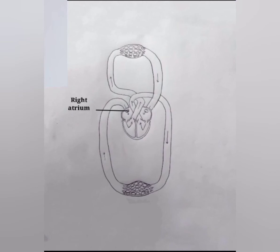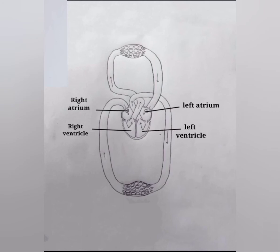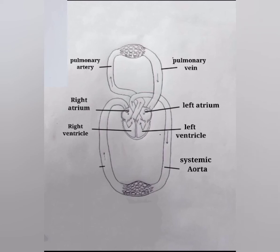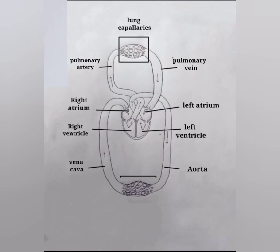This is the right atrium, this is the right ventricle, this is the left atrium, and this is the left ventricle. This is the pulmonary artery, this is the pulmonary vein, this is the systemic aorta, and this is the vena cava.